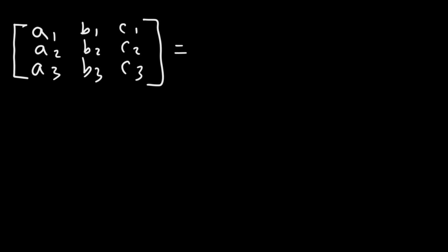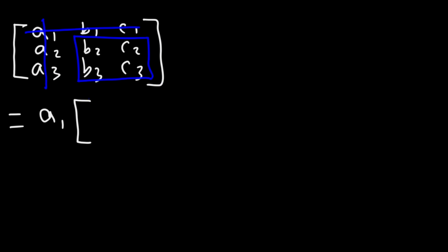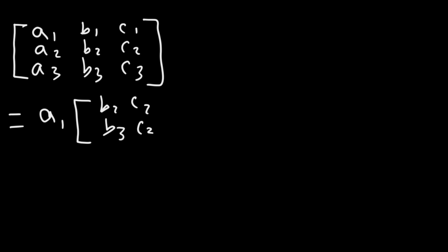So the determinant is going to equal the first element in the first row, that's A1. And then if you take out everything in row 1 and column 1, you'll be left with four elements which will be used to form a 2x2 matrix. So that's B2, B3, and C2, C3.